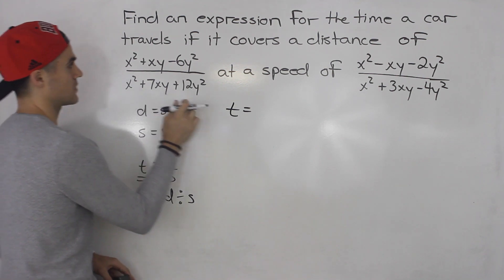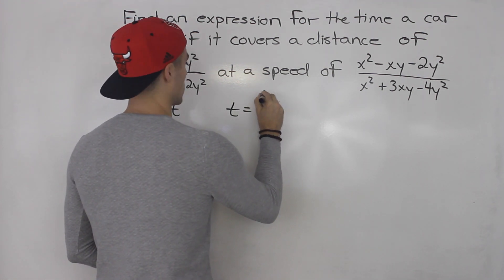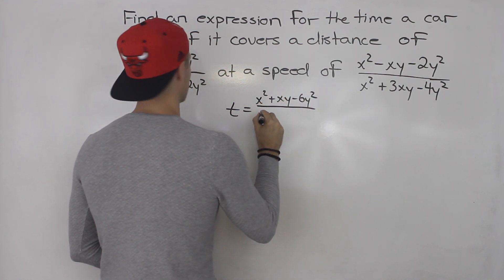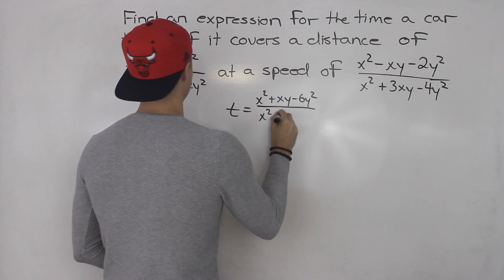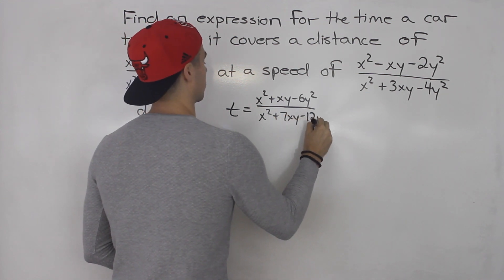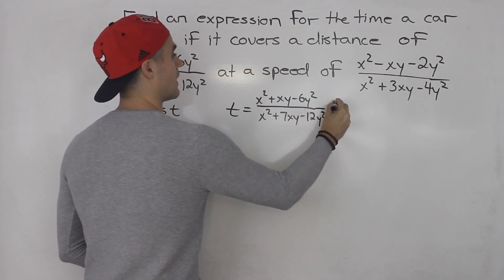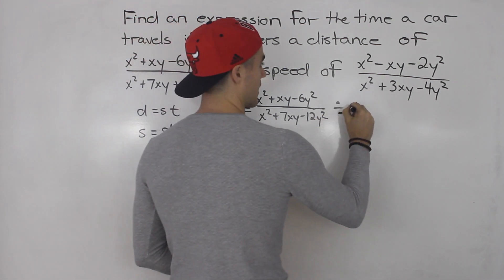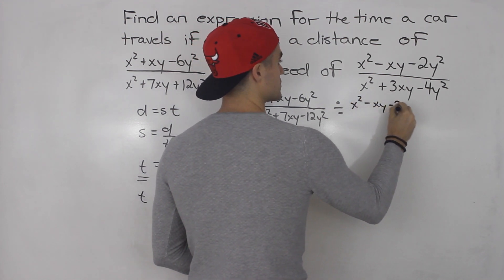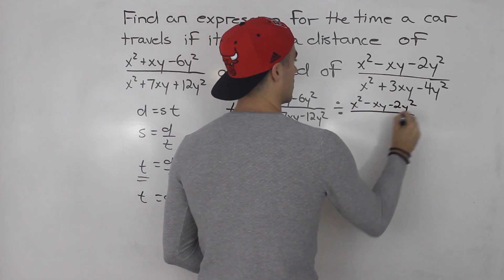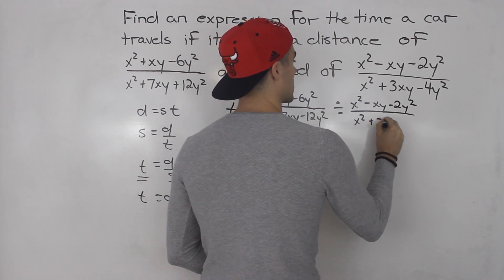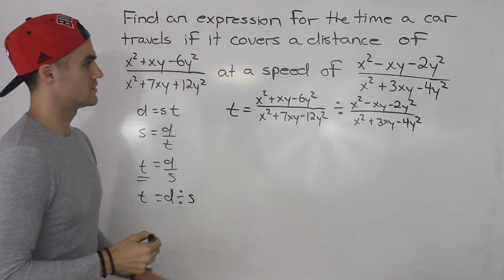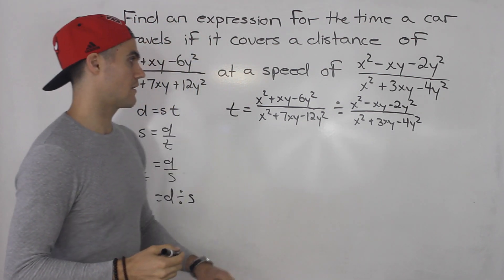Plugging in using this formula, the time is going to be the distance — x squared plus xy minus 6y squared over x squared plus 7xy plus 12y squared — divided by the speed, which is x squared minus xy minus 2y squared all over x squared plus 3xy minus 4y squared. So we're taking one rational expression and dividing it by the other.